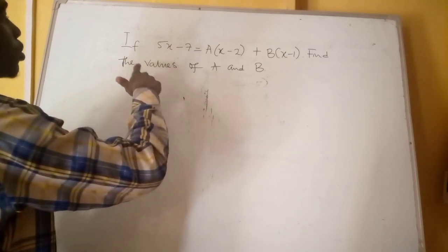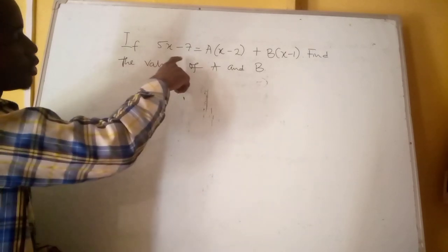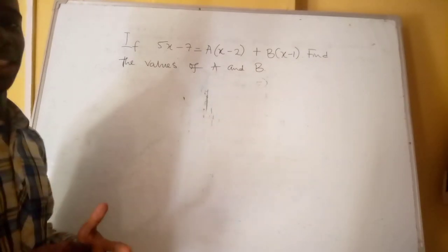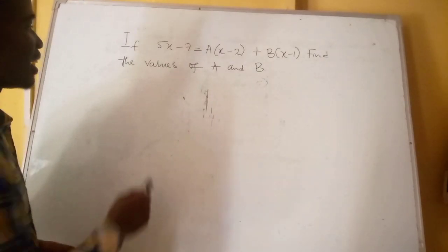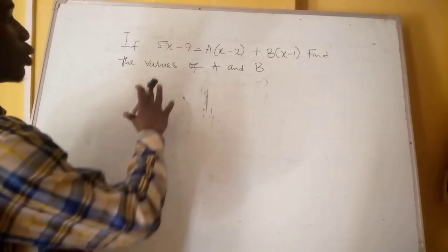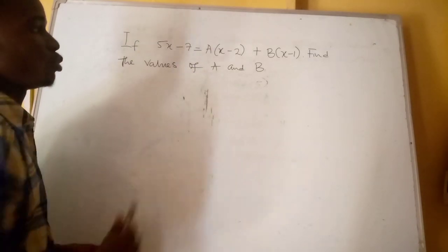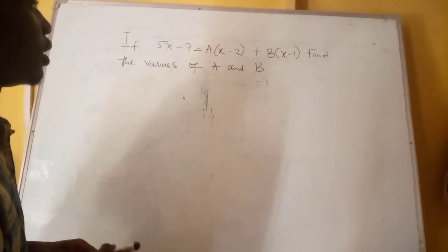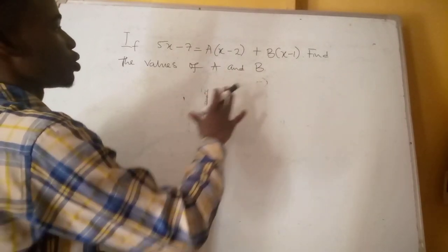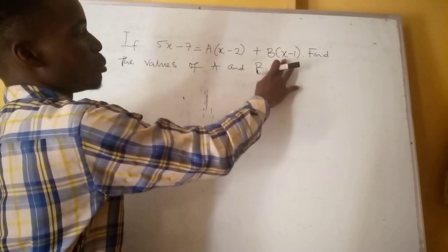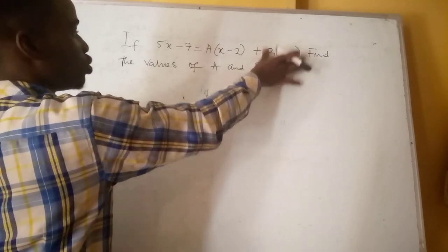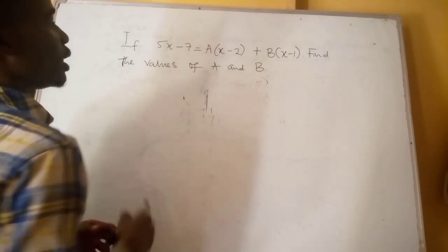Moving over to the next question: if 5x minus 7 equals a(x minus 2) plus b(x minus 1), find the values of a and b. To solve this, we are going to use the cover-up rule. The faster way is: we want to find a first, so we come to b and make b's bracket equal to 0, then we can solve for a.